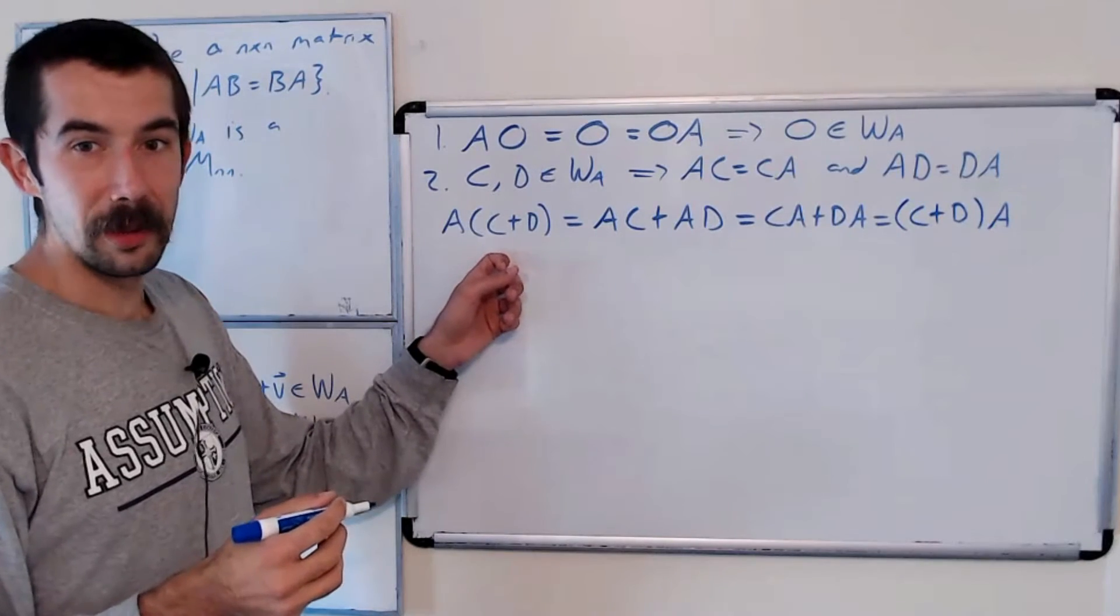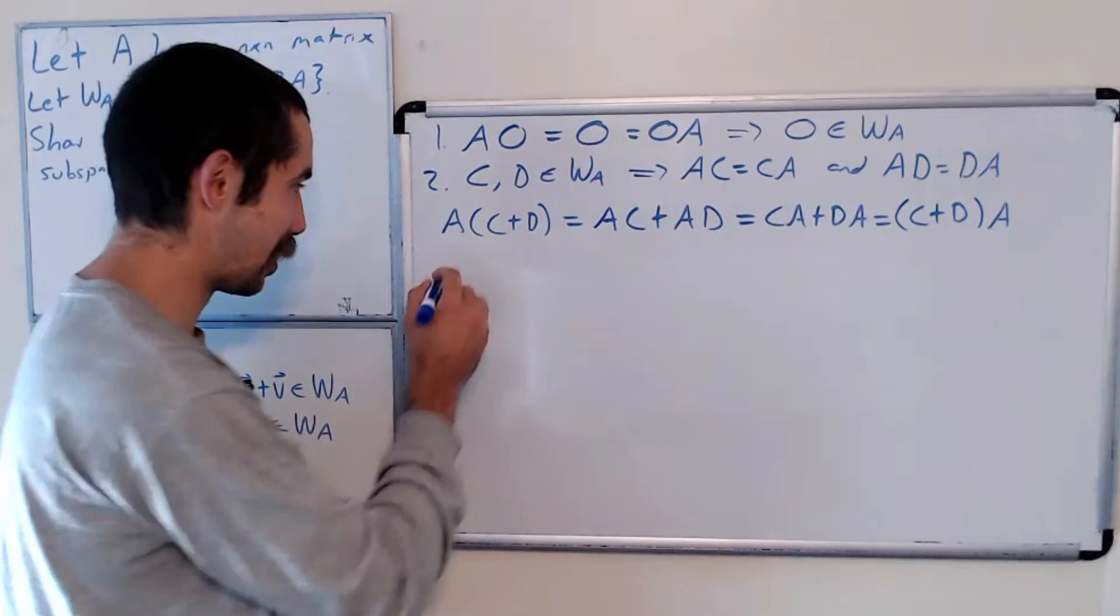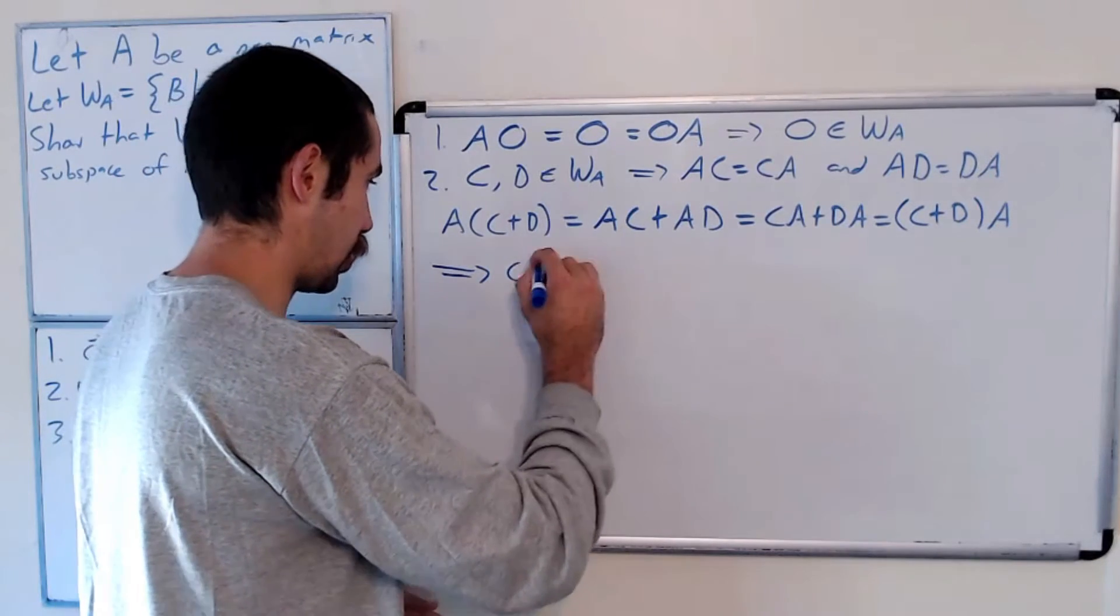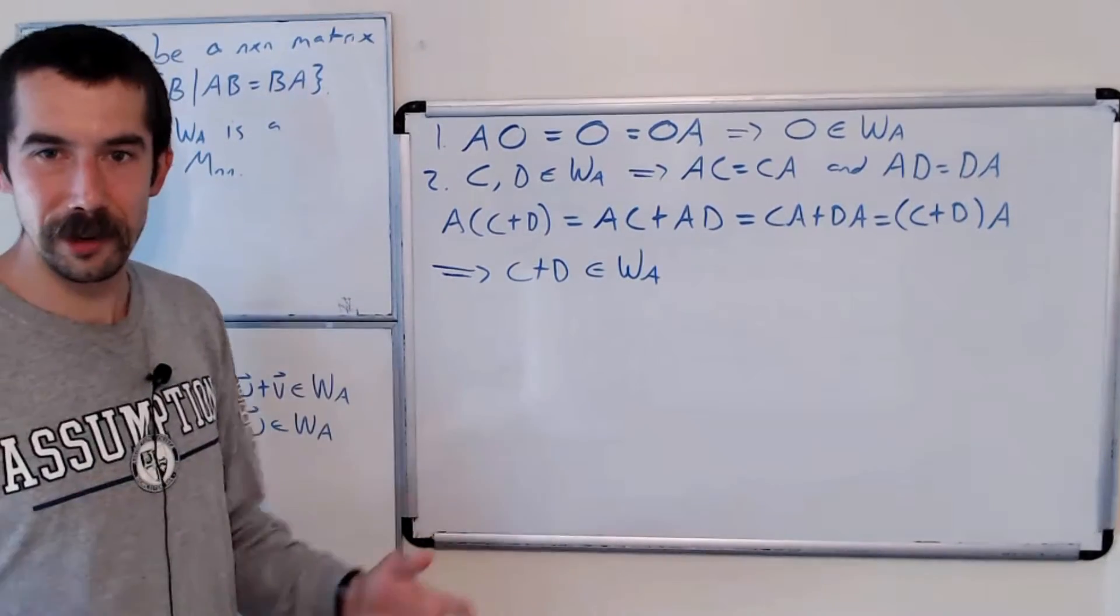And with properties of matrix multiplication, we know this is C plus D times A. So the matrix C plus D commutes with A, which means C plus D is in W sub A. So the first two conditions hold, let's just show that the last condition holds.